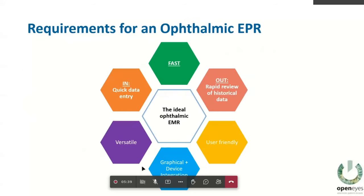As a busy ophthalmologist, when I think about an ophthalmic EPR, the things I really want it to do: number one, it has to be fast. Then I'm basically using it for two things — firstly to get data out: when I'm seeing a patient I want to see what happened in the past, their referral letters, previous investigations, imaging. Secondly, to put data in quickly — recording the examination, operation bookings, consent forms, and letters, all done as fast as possible.